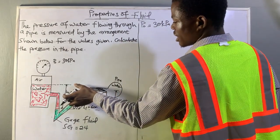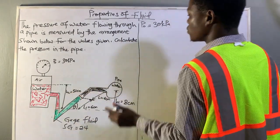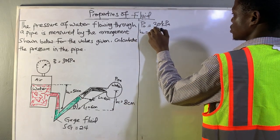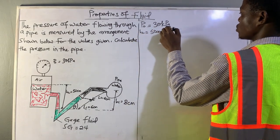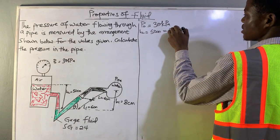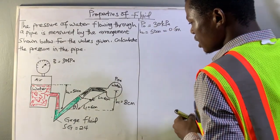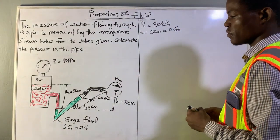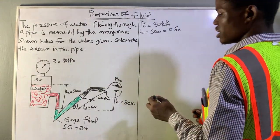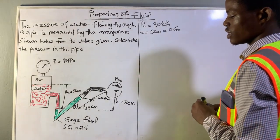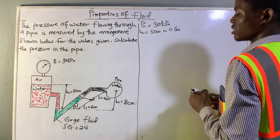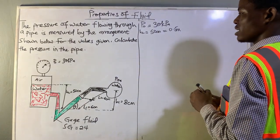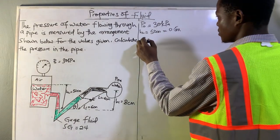We have a height here, that's the height of water, H2, which is 50 centimeters, also equivalent to 0.5 meters. We also have the gauge fluid, which is another form of a fluid, and it has a specific gravity of 2.4.